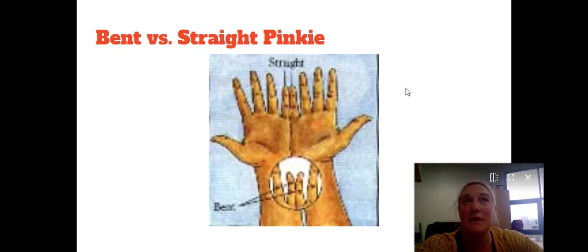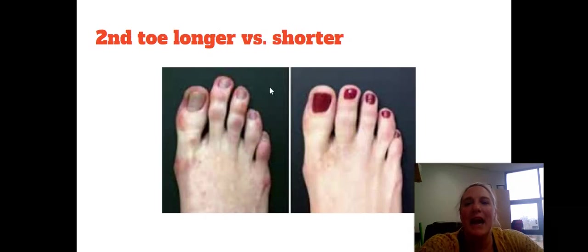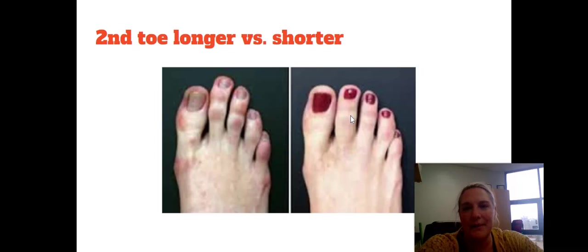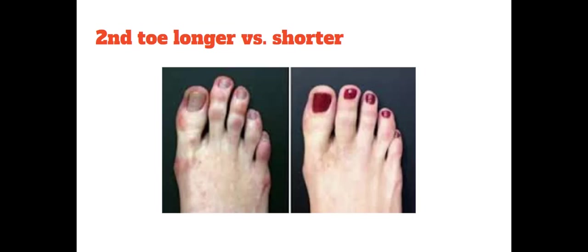For the next one, you actually have to take off your shoes and socks and look at your toes. Take off your right shoe and right sock, stand straight up, and look at your second toe. The second toe is either going to be longer than your big toe, or it's going to be equal to or shorter than your big toe. On your sheet, write longer or not longer.